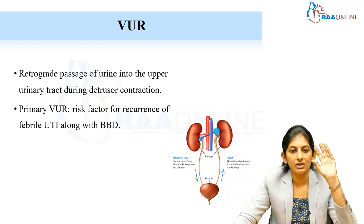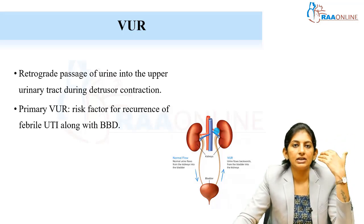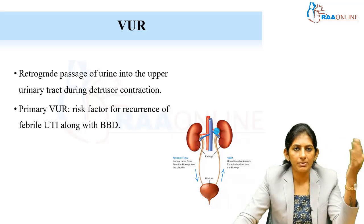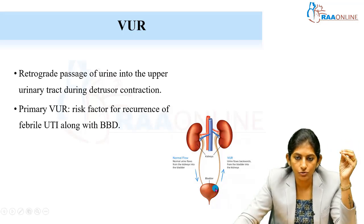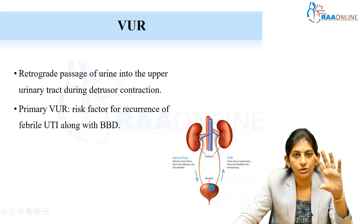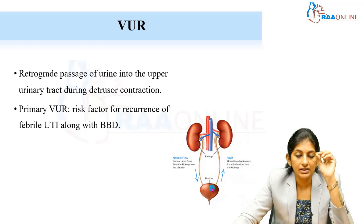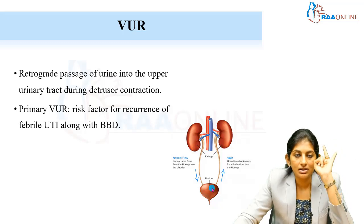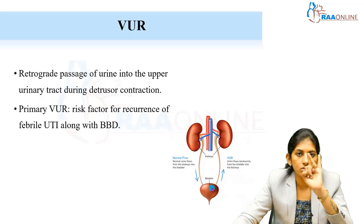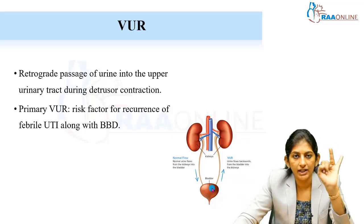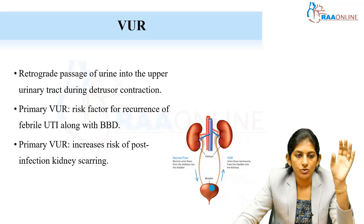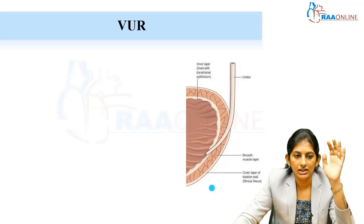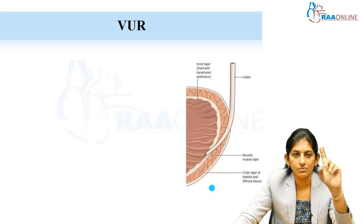Why are we concerned about VUR? There should not be a backflow of urine, because whenever there is backflow from the bladder into the kidneys, it is a risk factor for UTI. When UTI infections occur repeatedly, that causes kidney scarring. So primary VUR is one of the most common risk factors for UTI and renal scarring — it increases both infection and renal scarring.